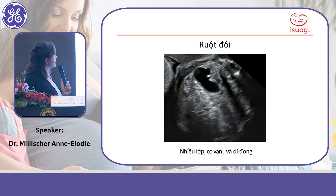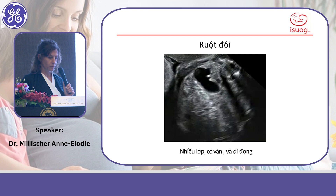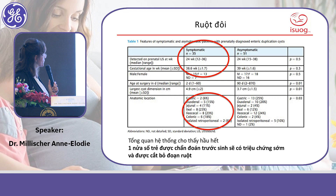The most reliable sign of bowel duplication is the striated and mobile aspect of the duplication structure — you see a cystic structure that moves and has striated layers. The prognosis is often very good for these fetuses.